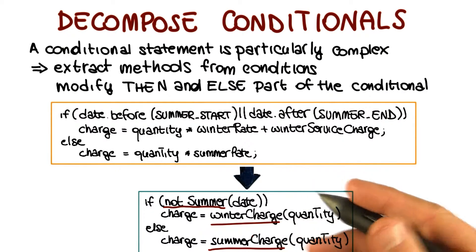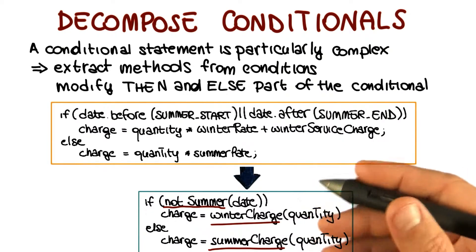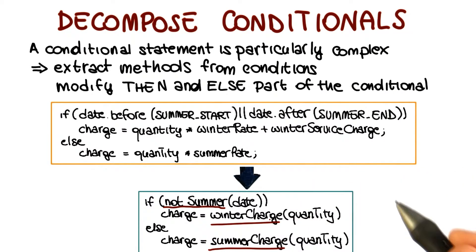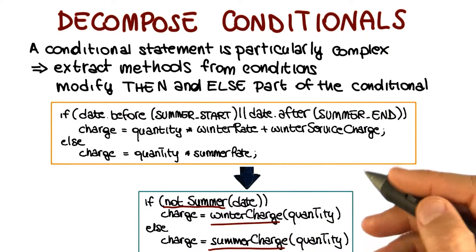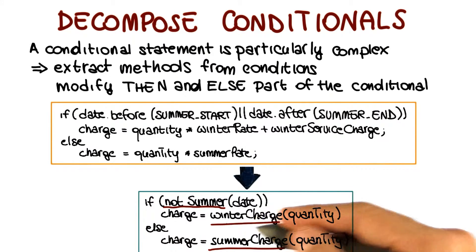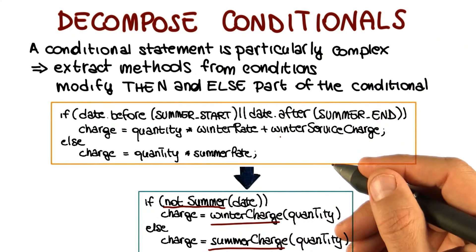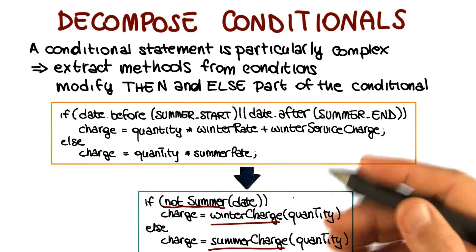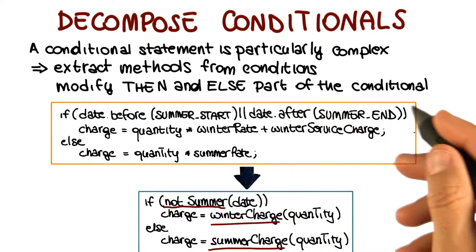So again, when I look at this code, I can clearly see that the charge is computed using some sort of winter charge calculation, and then using some sort of summer charge calculation. And if I don't want to know how this is exactly computed, that's all I need to know to understand what this method does. Easier and faster than looking at this method and figuring out what it does.